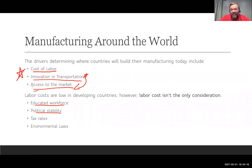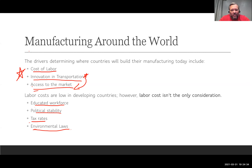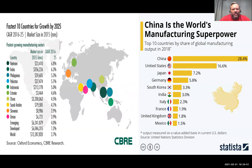Other factors companies consider include: Is the workforce educated? Is there political stability — will someone nationalize the industries? What are the tax rates? Some companies leave the US for lower taxes. What are the environmental laws? Companies that are bigger pollutants may locate in countries with less strict environmental regulations.